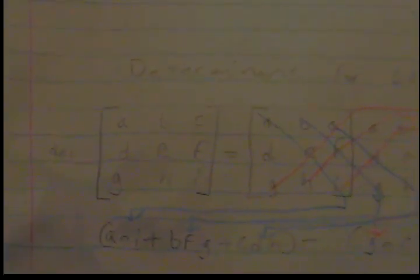If you had a 3x3 matrix like this one for example, you would take the first two columns and put them to the right. Then you would multiply diagonally down: A times E times I, then you would add the next one, which would be B times F times G, then you would add C times D times H, and you would multiply all of those and add them.